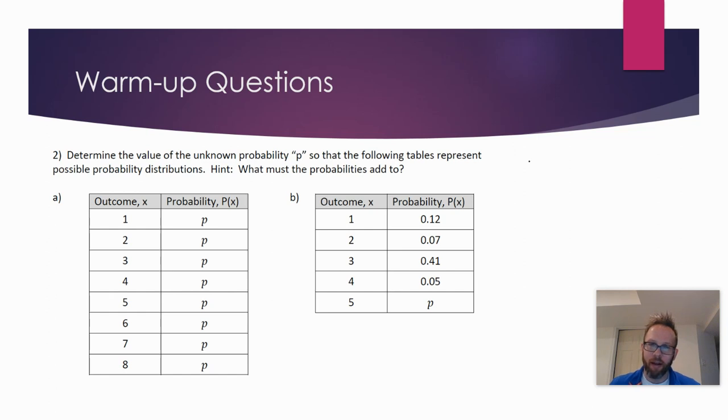And if you want to pause and think about that for a moment, you can. But the key is that the probabilities, so if you add up the sum of all the probabilities in a probability distribution, they have to equal one. So whatever this probability in part A, whatever this probability P is, they have to add to one.